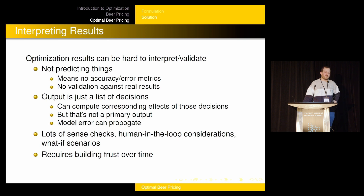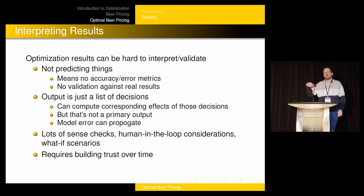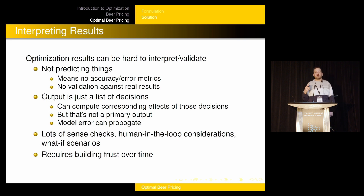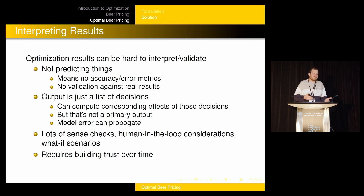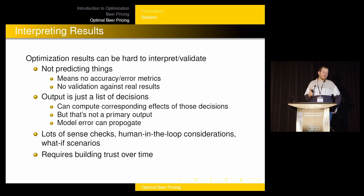When you're done, you're going to have to interpret the results, and that's really hard. It's hard to build trust because you're not building a model — you're not predicting things, which means there are no accuracy or error metrics of any kind. There's no validation against real results where you can say, I optimized in the past and this compares favorably to what you actually did. The output is just a list of decisions — in this case, prices: here are the prices you should set. You can compute the corresponding expected effects of those price decisions, and if that doesn't make sense, it's a good hint. But you need lots of sense checks, a lot of human-in-the-loop interactions, what-if scenarios, and you've got to build trust over time.